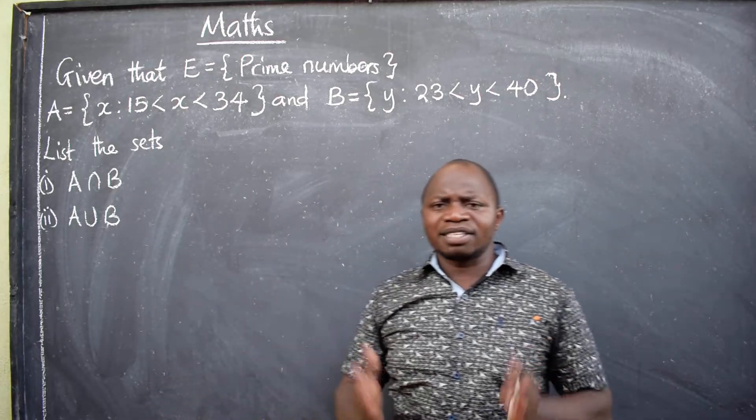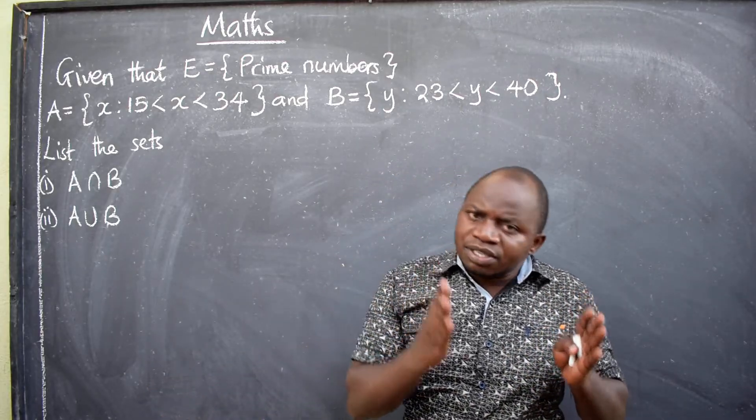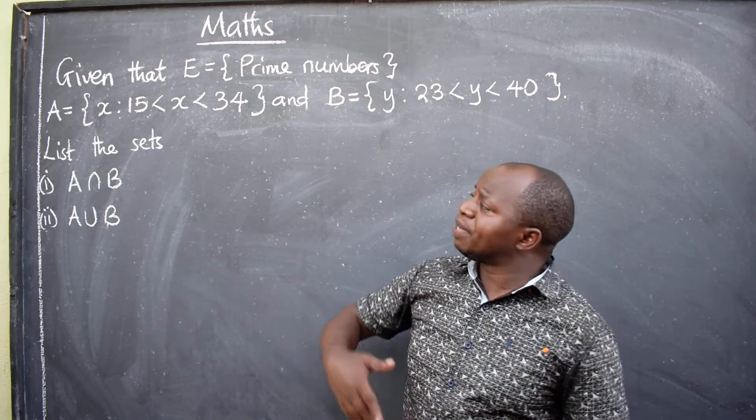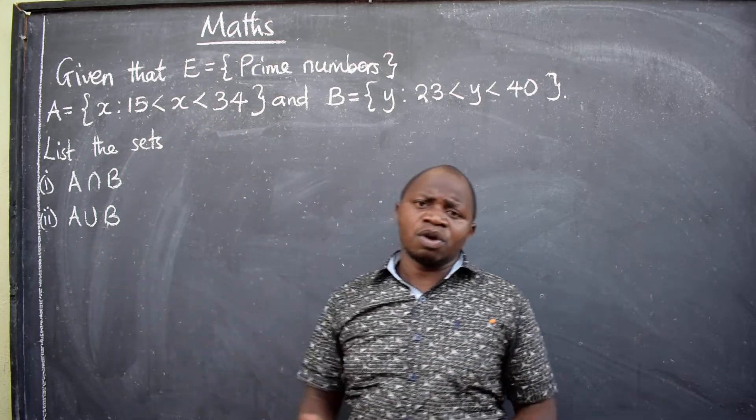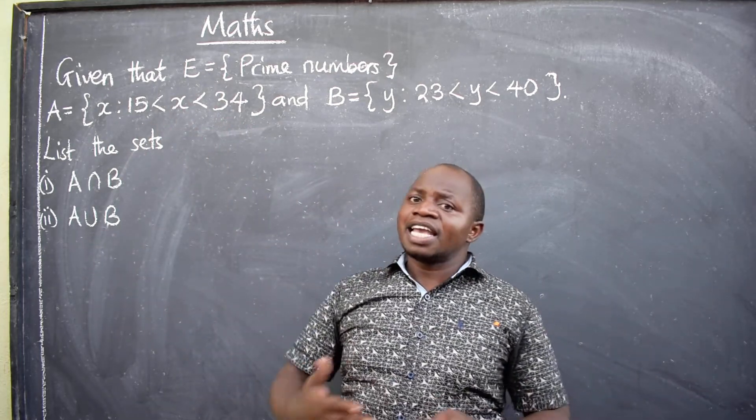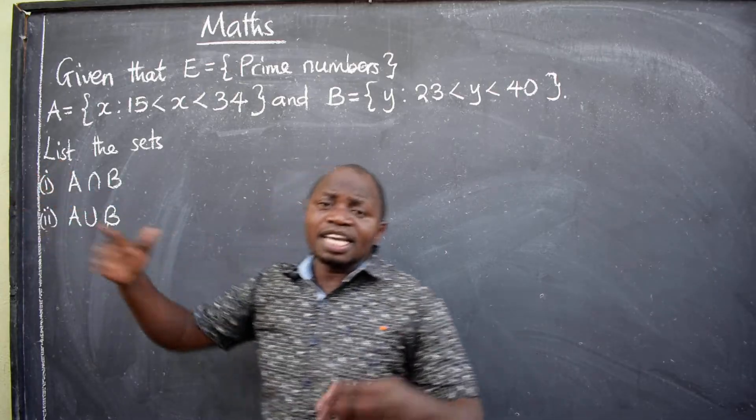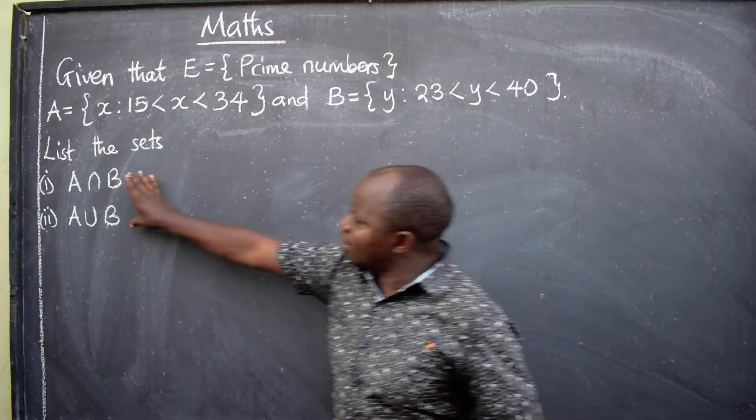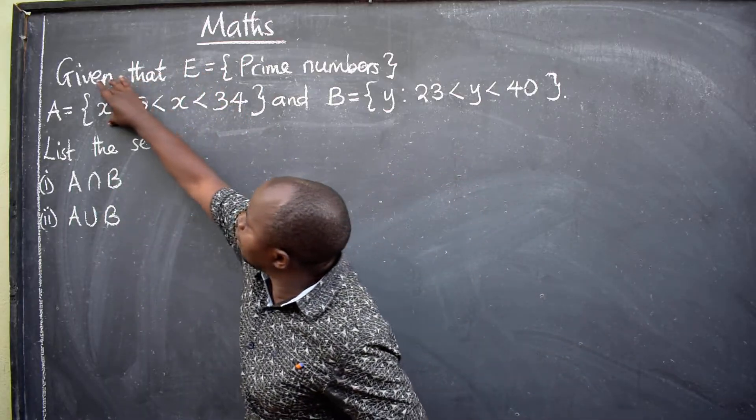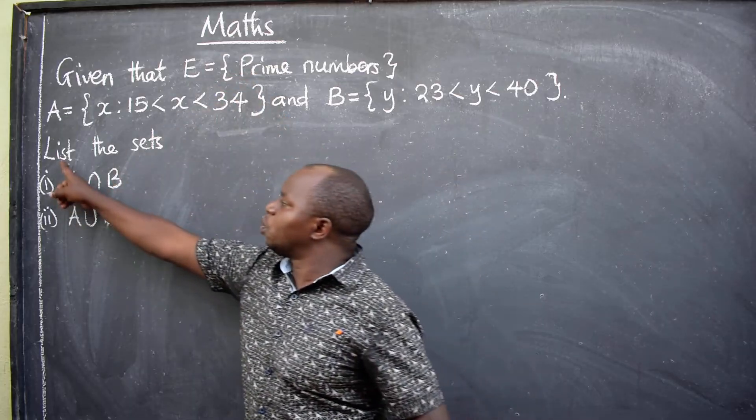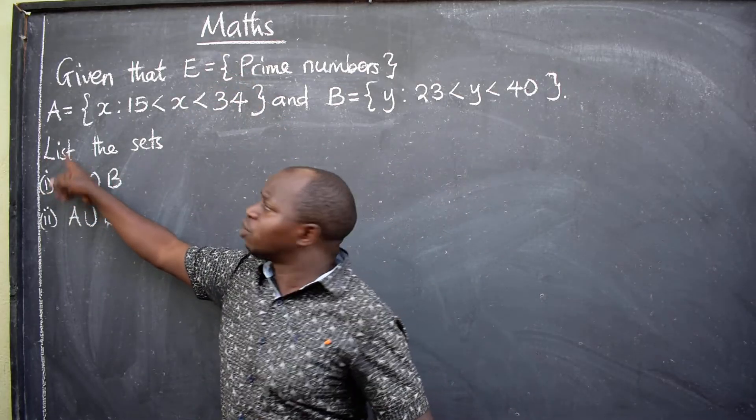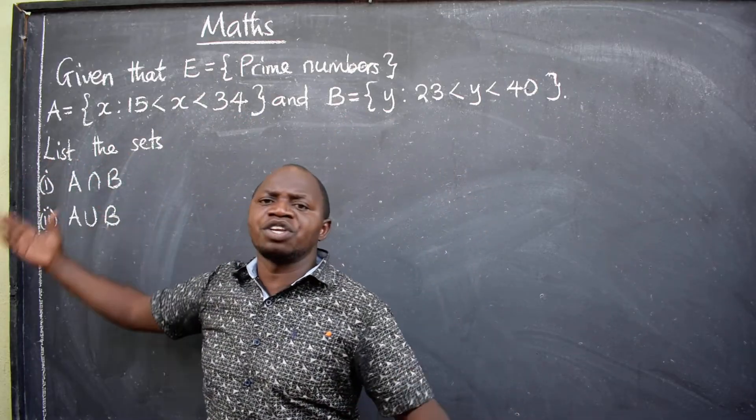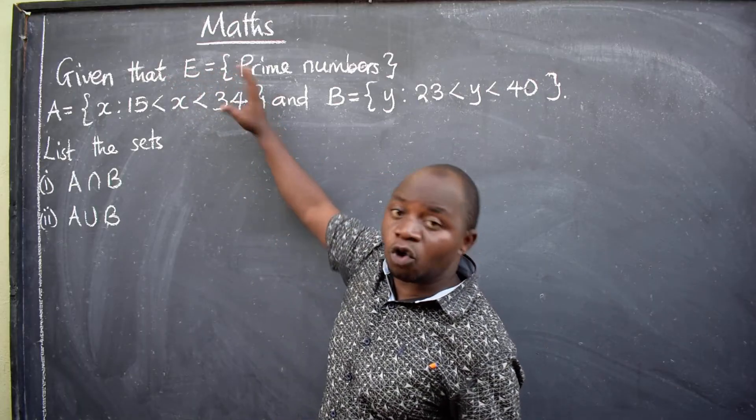Now remember, a set can be described in different ways. One, it can be in word form, which is description. It can be in listed form. It can be in set builder notation like this. So now, to get these questions correct, you have to change from set builder notation to listing form. We are going to rewrite these two sets into listing so that we know what they are talking about here. Hope we are together.